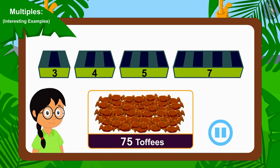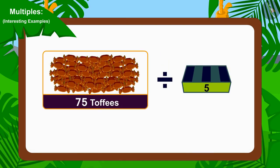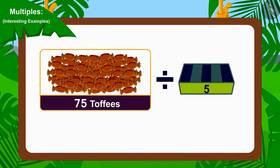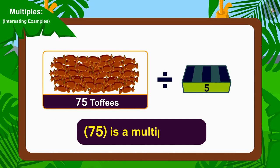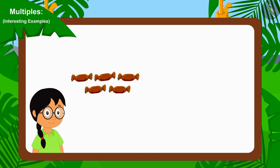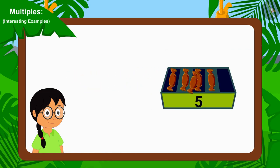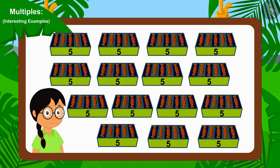Children, you have found the answer absolutely correctly. We can divide 75 by five. In other words, 75 is a multiple of five. Therefore, by forming a group of five toffees, Minu can divide these toffees equally among her friends.